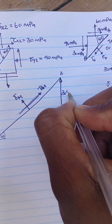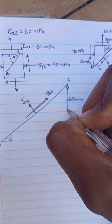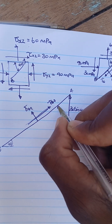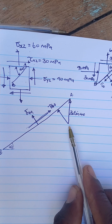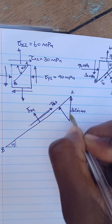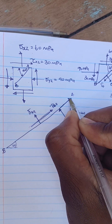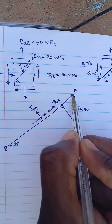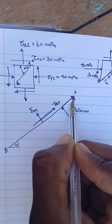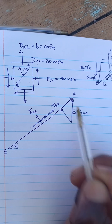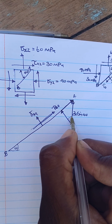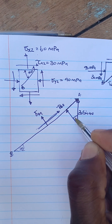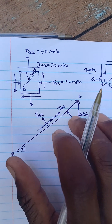We start with the 30 MPa shear component. This will be 30 sine of 40 degrees. Extending this line, we complete the force diagram head to tail. Each force has its components when applied at an incline. If this angle is 40, then to make it 90 degrees, this angle must be 50, and therefore this remaining angle here must be 40 degrees.